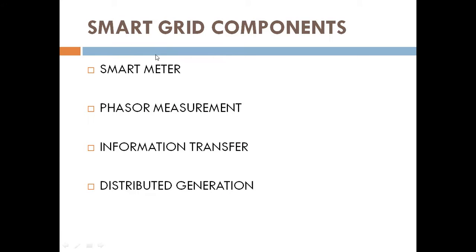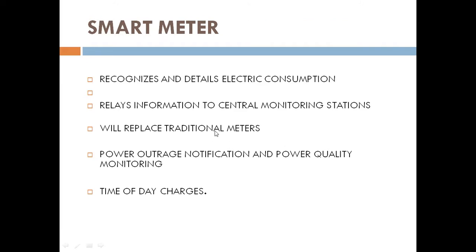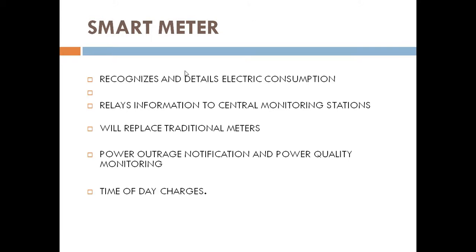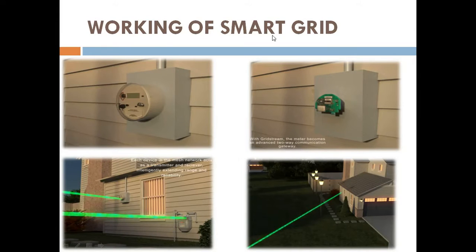The components of smart grid are: smart meter, phasor measurement, information transfer, and distributed generation. The smart meter recognizes and records electric consumption details, relays information to central monitoring systems, and will replace traditional meters. It also powers outage notification, power quality monitoring, and time-of-day — possibly hourly — charges.